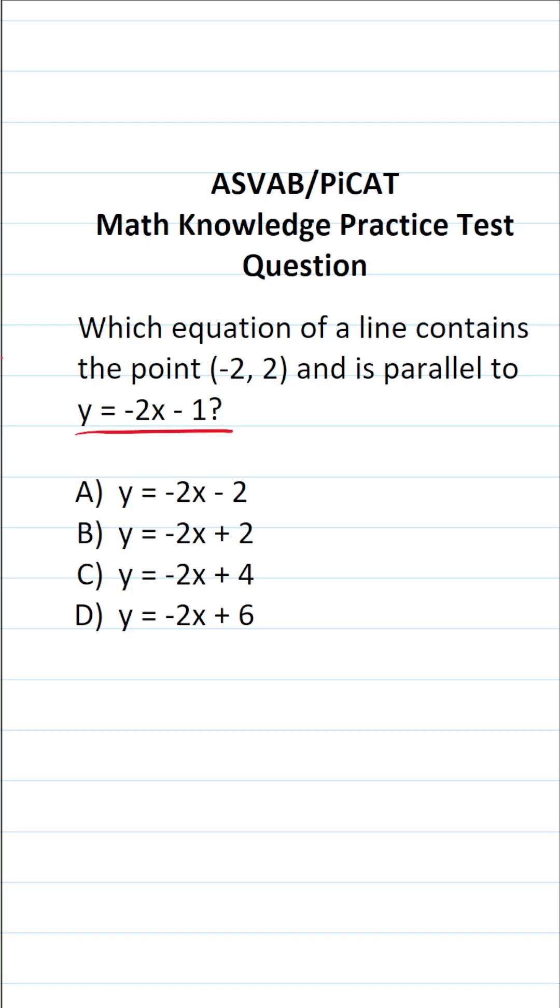So let's start with this equation that we're given, notably y equals negative 2x minus 1. It's an equation of a line given in slope intercept form, that is y equals mx plus b, and you have to know that m is always going to be your slope, so m in this case is negative 2.